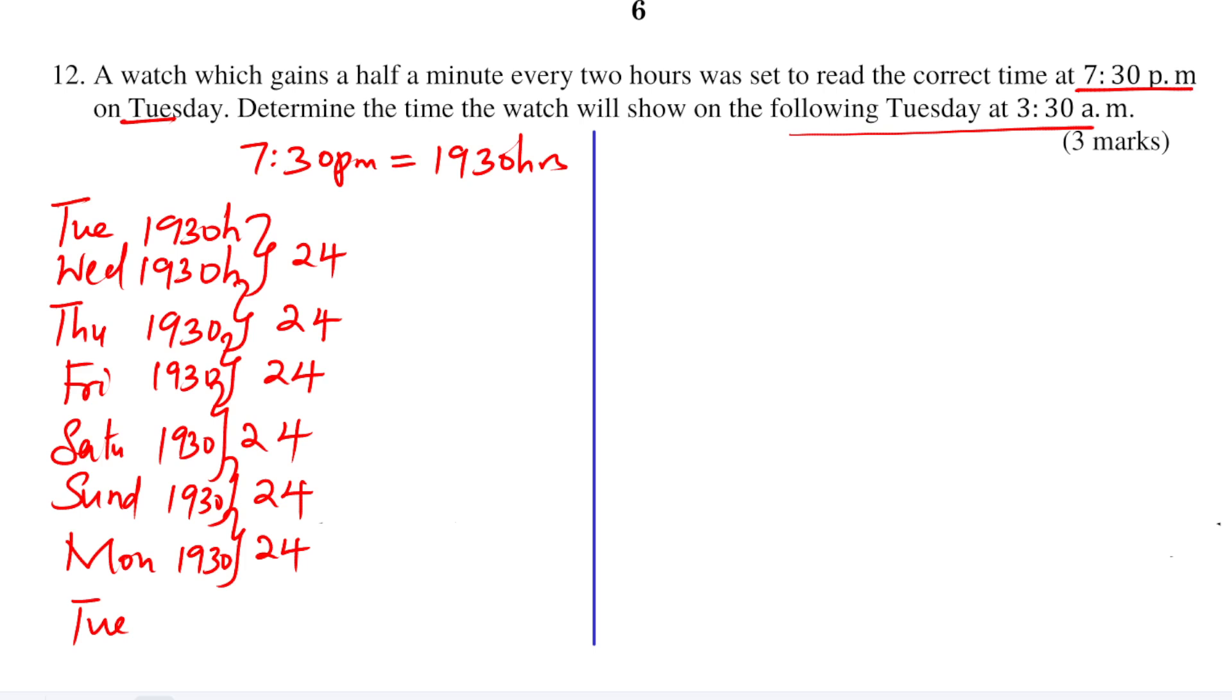Then from Monday to Tuesday. Now in the following Tuesday it is not 19:30, it is 3:30. So 3:30 AM is equivalent to 27:30 hours written in 24-hour clock system. I am writing this in 24-hour clock system for it to become easier when calculating the time. From Monday 19:30 to Tuesday 27:30, which is the same as 3:30 AM. How many hours are these?